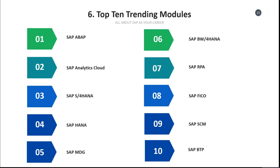The sixth one is BW4 HANA, which is becoming very trendy right now. And the next one is SAP RPA — Robotic Process Automation — which is going to be the next dominant market in SAP.